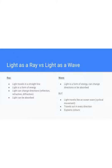Previously in this unit, we've looked at how light travels as a ray. So light travels in a straight line, it's a form of energy, and it can change directions, either being reflected or refracted. Light can also be absorbed by different substances.